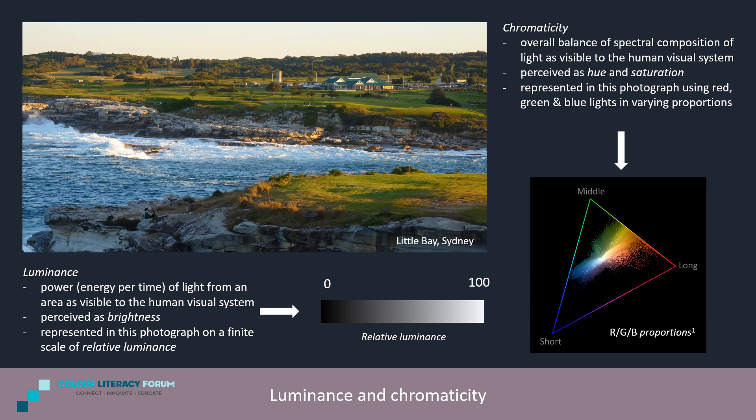Our visual system does much more than just represent to us variations in luminance and chromaticity. Unconsciously and seemingly instantly, it accounts for these variations in terms of superimposed estimates of the intensity and chromaticity of the light falling on objects, and of the disposition of those objects to reflect different parts of the spectrum. We also perceive these unconscious estimates of spectral properties as colours, so that in the same area we can perceive colours relating to objects, colours relating to the light falling on objects, and colours relating to the light reaching our eyes from objects.